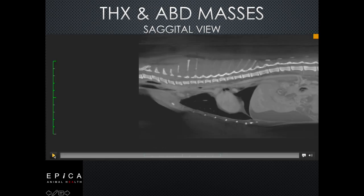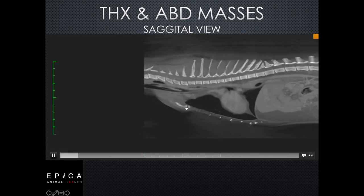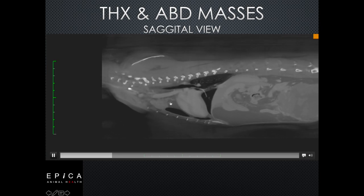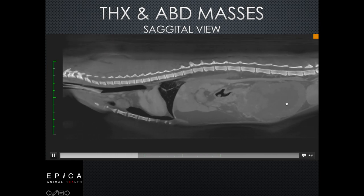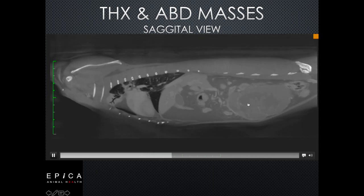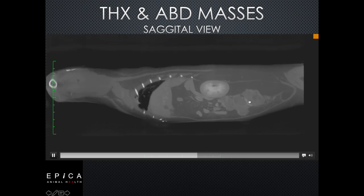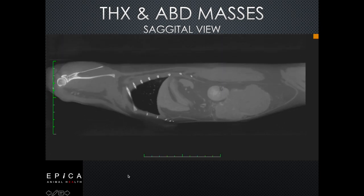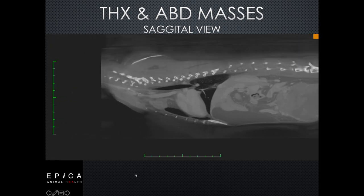Here we have a feline patient with a mediastinal mass shown in a sagittal view. Back here in the abdomen, this is a very large mass that's basically taking up a good half of the abdominal cavity. This is the sagittal view only, but we can see this in all three views if we wanted to.